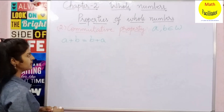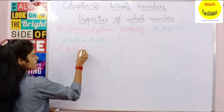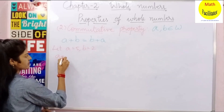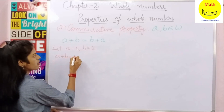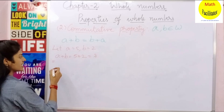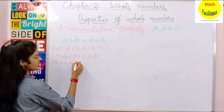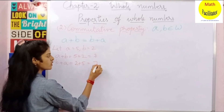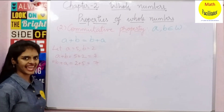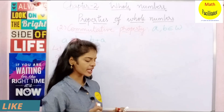Let us take some example. Let A equal to 5 and B equal to 2. A plus B is nothing but 5 plus 2, which is 7. Now B plus A is 2 plus 5, which is also 7. So A plus B is equal to B plus A. Commutative property is satisfied under addition.